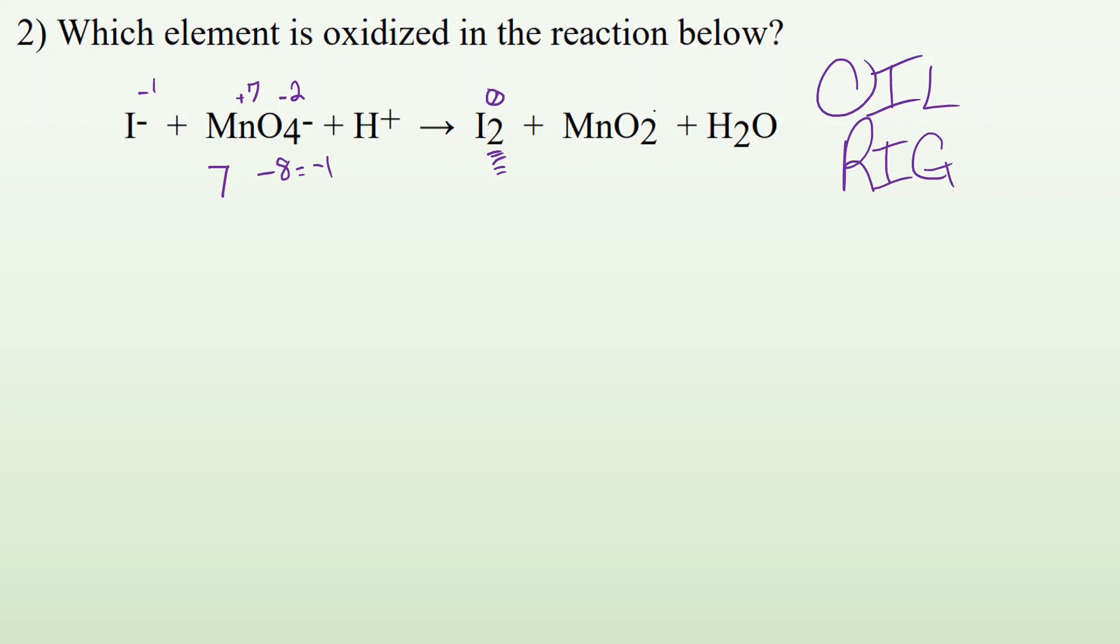Alright. Since MnO2 has no charge shown over here, that tells us that the whole thing has to equal zero. So I know that I got oxygens. There's a minus two on each of them, and there's two of them. So I have a minus four from all those oxygens. If the whole thing has to equal zero, there must be a plus four. And where is that coming from? The one Mn. So that Mn has a plus four.